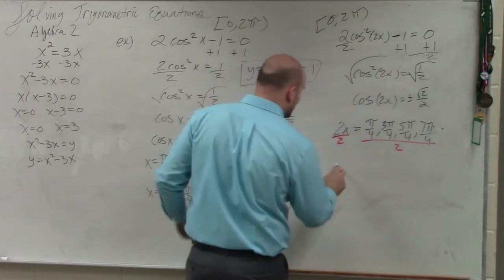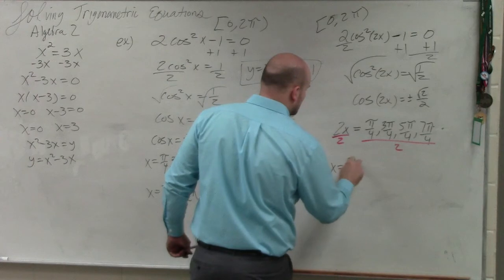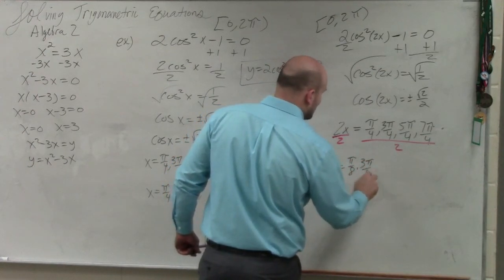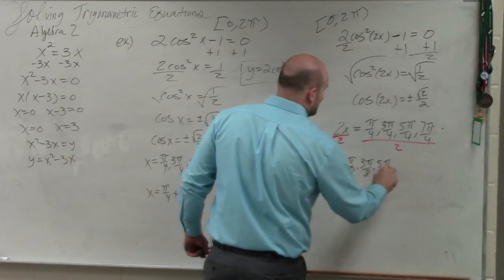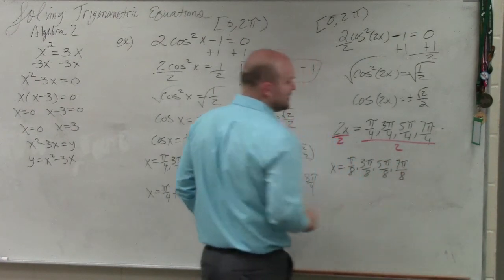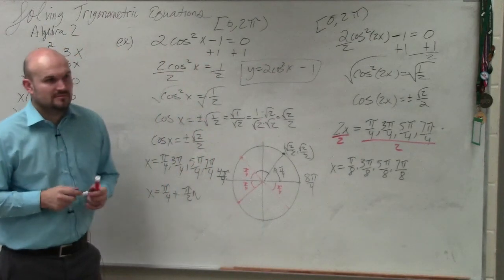So therefore, I now have x equals pi over 8, 3 pi over 8, 5 pi over 8, and 7 pi over 8. OK?